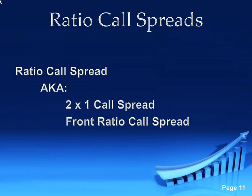So the ratio call spread — a two-by-one call spread is another way it's known, or a front ratio spread. When I put this into Think or Swim, though, it's going to say it's a back ratio spread. A back ratio spread, legitimately, is a one-by-two, which means you're basically selling one call and then buying two. So one-by-two is really the back ratio spread — you're trying to finance a couple of those calls with the two calls you're buying. This one, we're doing a two-by-one: buying one call and then selling two calls against it. So we're creating a long call spread with an extra short call in there.